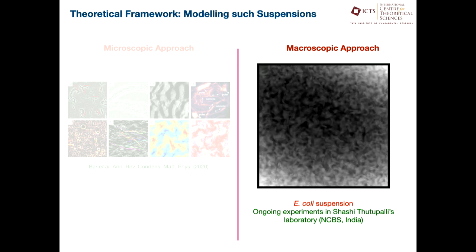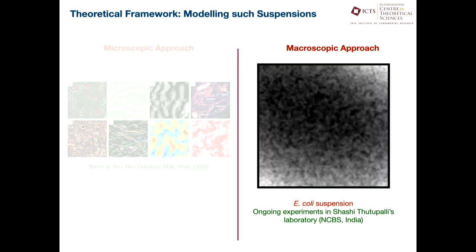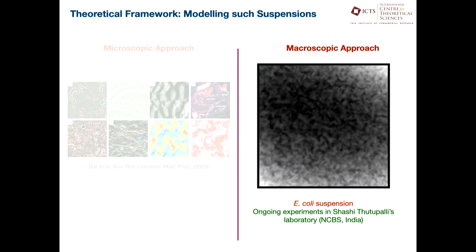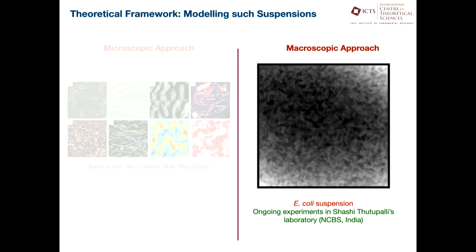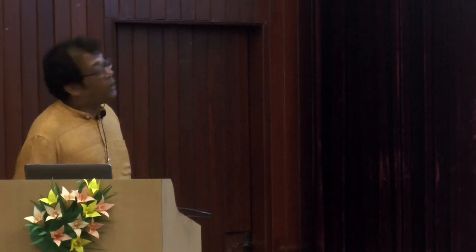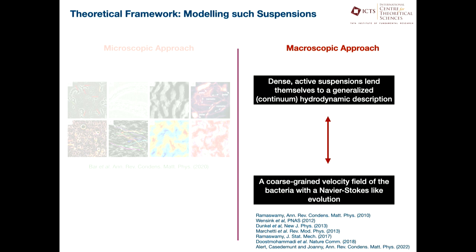Here, for example, is a movie from experiments going on in Shashi's lab with one of his students and my postdoc. The approach is: if I zoom out a little and start observing these flows, they seem to be nicely swirling, chaotic, and in particular they look kind of turbulent — to give the game away. But this, again, is really low Reynolds number, not the sort of Reynolds number Jeremy was talking about yesterday. So the macroscopic approach lends itself to a continuum coarse-grained hydrodynamic description and a coarse-grained velocity field.